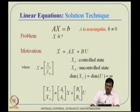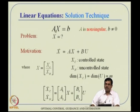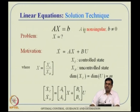The first problem that comes to mind is linear equation solution. Suppose you have Ax = v, where A is a square matrix with determinant of A not equal to 0 — meaning A is non-singular and v is not equal to 0. Then x = A inverse v.